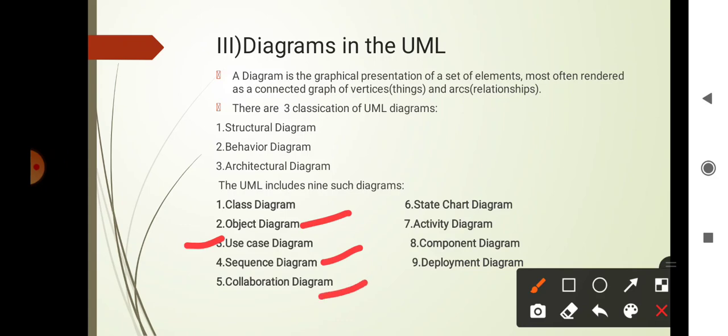Fifth is the collaboration diagram: a behavioral diagram that shows an interaction emphasizing the structural organization of the objects that send and receive messages. Sixth is the state chart diagram: a behavioral diagram that shows a state machine emphasizing the event-ordered behavior of an object. Seventh is the activity diagram: a behavioral diagram that shows a state machine emphasizing the flow from activity to activity. Eighth is the component diagram: a behavioral diagram that shows a set of components and their relationships. Ninth and last is the deployment diagram, which shows the distribution, delivery, and installation of the parts that make up the physical system.